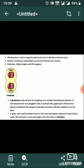In plant cells, wall formation starts at the center and grows outward to meet the lateral walls. The formation of the new cell wall begins with the formation of a cell plate.